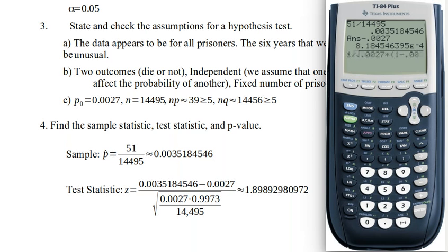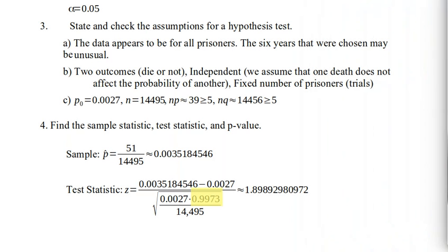I haven't done this arithmetic ahead of time, so I'm going to do it inside the expression. So I'm going to open parentheses, 1 minus P, 0.0027. You can see that that works out to 0.9973. But I'm working through this entirely within the calculator. So let's close those parentheses around Q. We're still in the radical. We're now going to divide by N, 14,495. I'm going to close the parentheses that basically close the radical in the denominator, and press enter. And I get a test statistic of 1.8989 and so on. So now I've got the sample statistic and the test statistic.